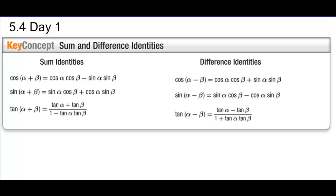If we take the cosine of one angle plus another angle, that's the same as taking the cosine of the first angle times cosine of the second angle, and then minus the sine of the first angle times sine of the second angle. Notice that if we are adding the two angles, the formula says we need a minus in the middle. For sine, the sine of alpha plus beta equals sine of alpha times cosine of beta plus cosine of alpha times sine of beta. The signs for sine are the same.